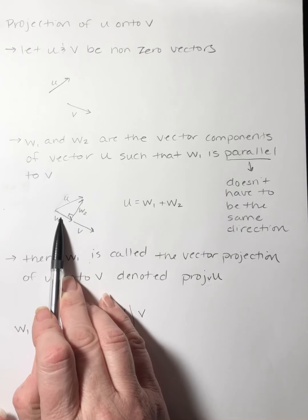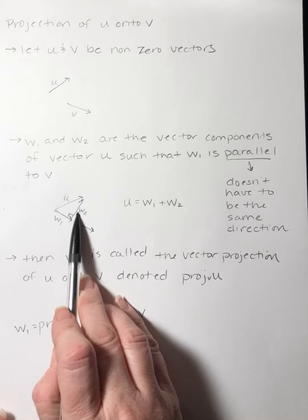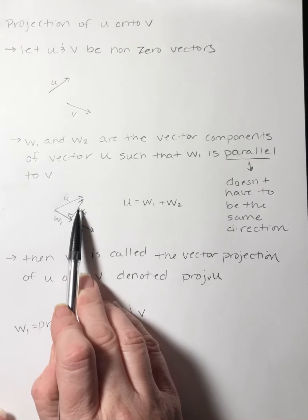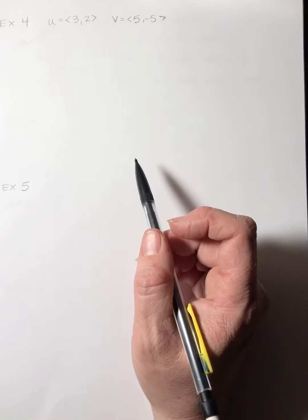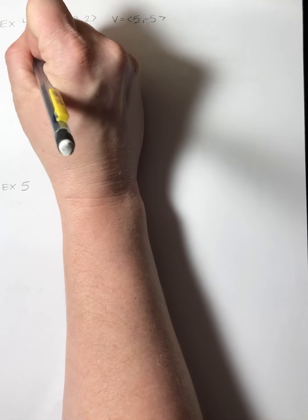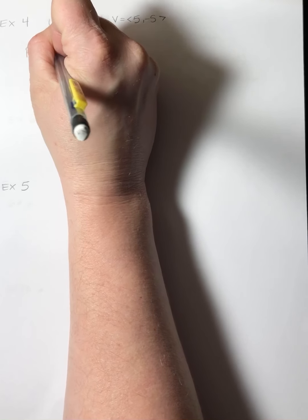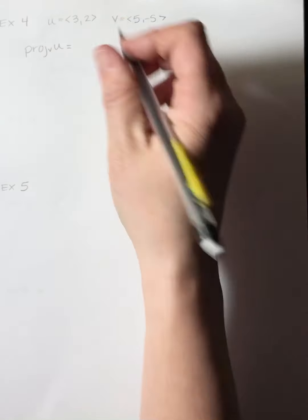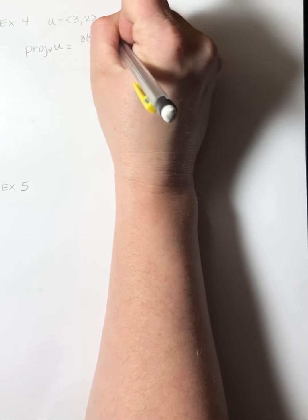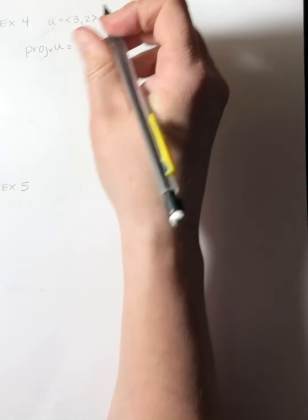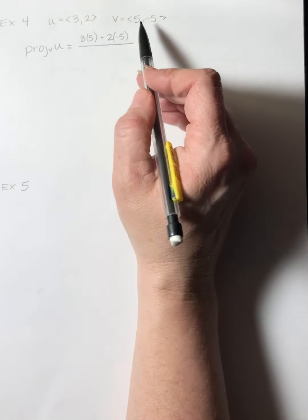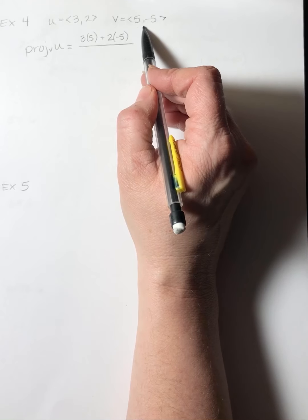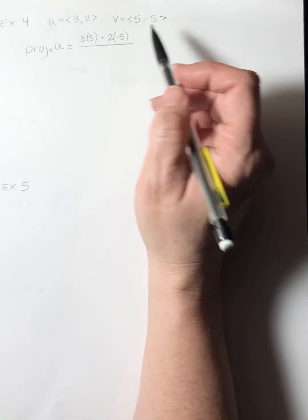What we're doing is finding w sub 1, and then writing u as the sum of these two vectors. Once you find w sub 1, you take u minus w sub 1 to get w sub 2. For the projection of u onto v, on top we take their dot product: 3 times 5 plus 2 times negative 5. On the bottom, unlike the angle formula, we only need the magnitude of v — the square root of a squared plus b squared, then squared.